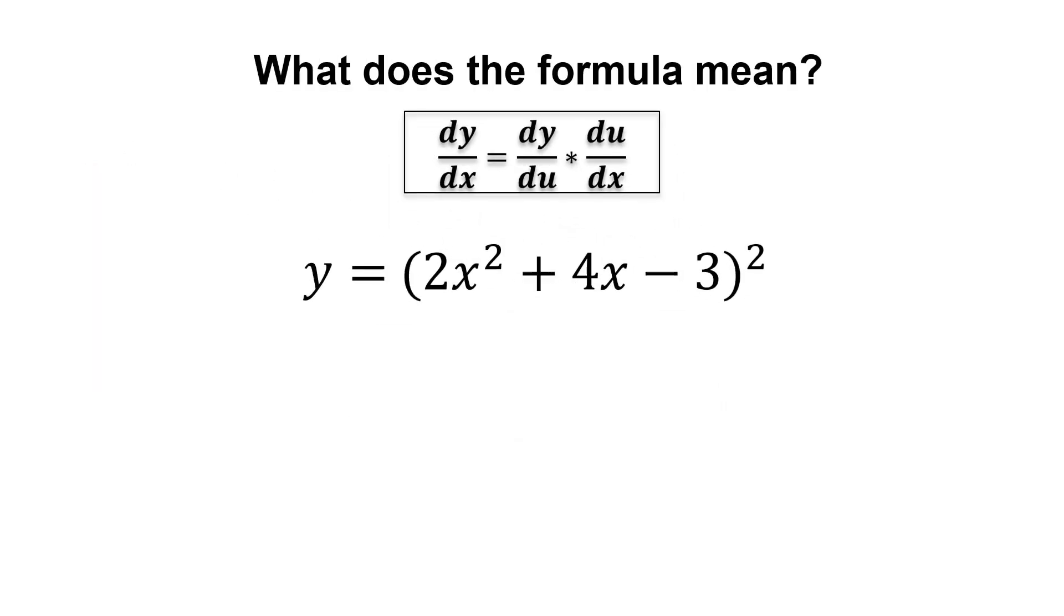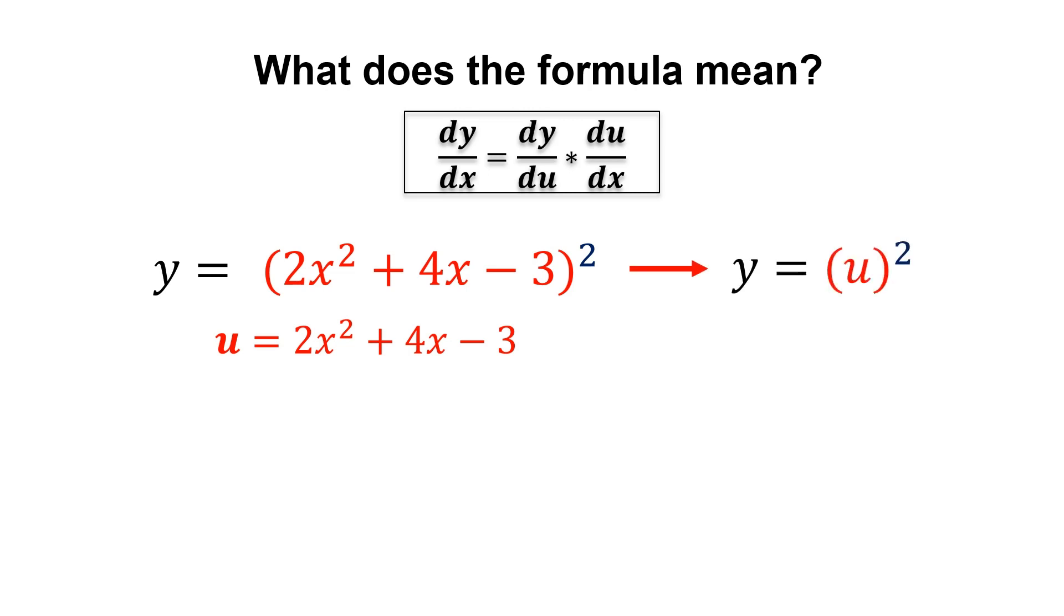It actually means that when we're finding the derivative of a composite function, we can let the inner function to be u, so that we can rewrite the function in terms of u. Notice that the inner function of 2x squared plus 4x minus 3 is replaced by u. To find the derivative, we first differentiate the function of y with respect to u. Then, we multiply it with the derivative of the inner function.